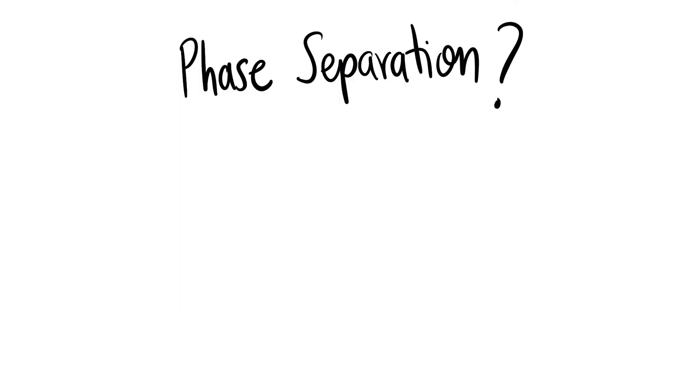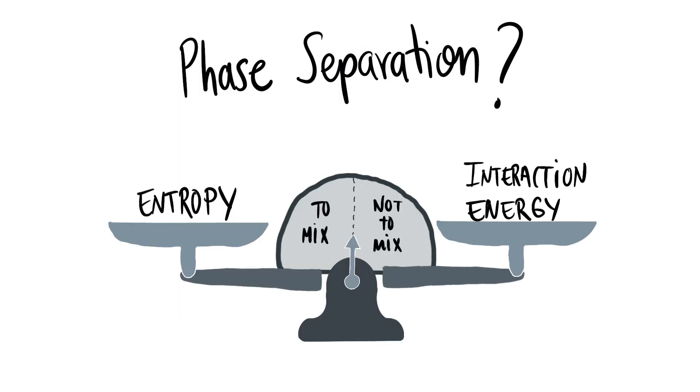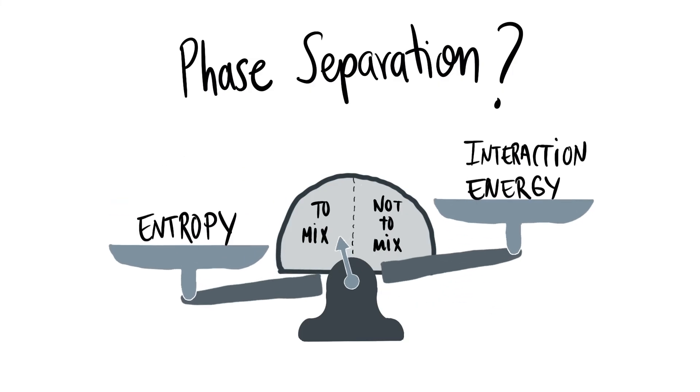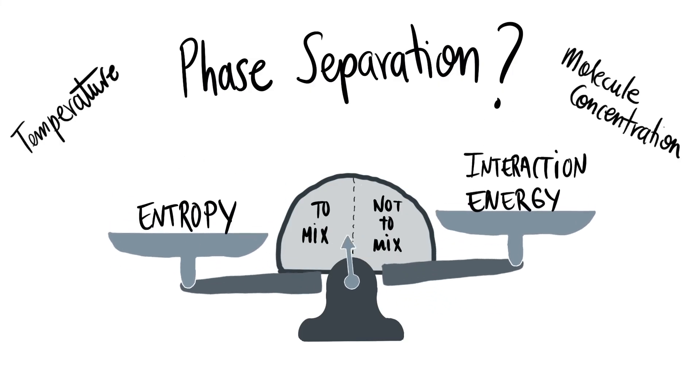So, when will two liquids phase separate? Well, it depends on the balance of entropy and interaction energy. This balance depends also on temperature, molecule concentration, and pH.